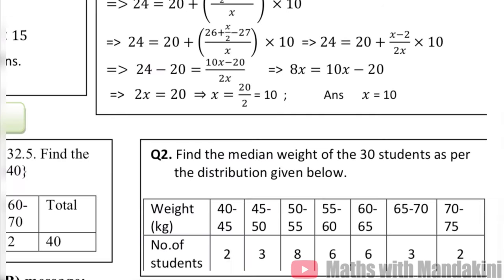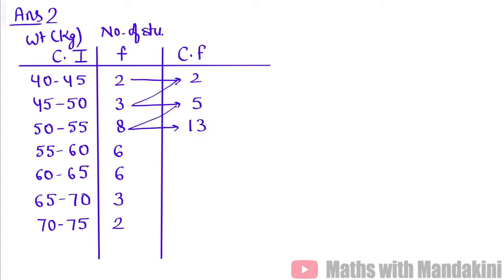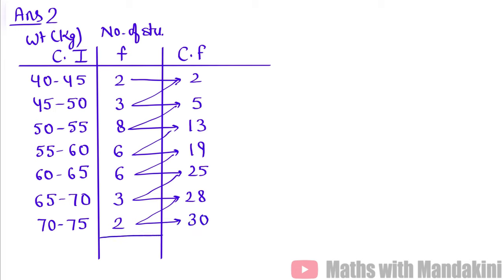Question 2: Find the median weight of 30 students as per the distribution given. We have weight in kilograms and the number of students (frequency). We calculate cumulative frequency: 2, 5, 13, 19, 25, 28, 30. The last cumulative frequency equals the total frequency of 30 — both match, so the cumulative frequency is correct. This is a self-check.